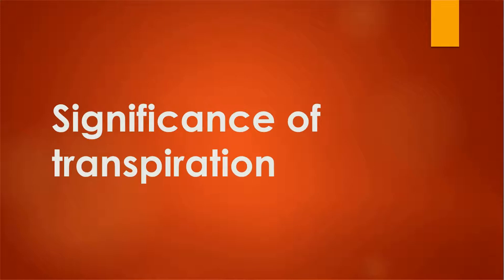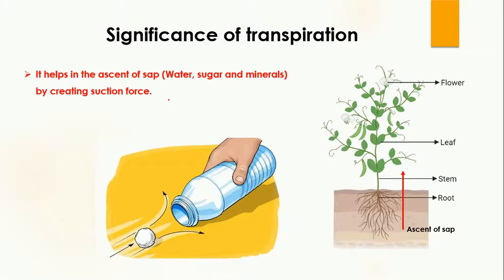Let's get back to the topic: significance of transpiration. The first significance is that it helps in the ascent of sap. Sap is actually water, sugars, and minerals — all the things required by plants for their growth and development. The ascent of sap means the movement of water, minerals, and sugars from the lower parts to the aerial parts of the plant. Transpiration creates a suction force that moves all these things upward.